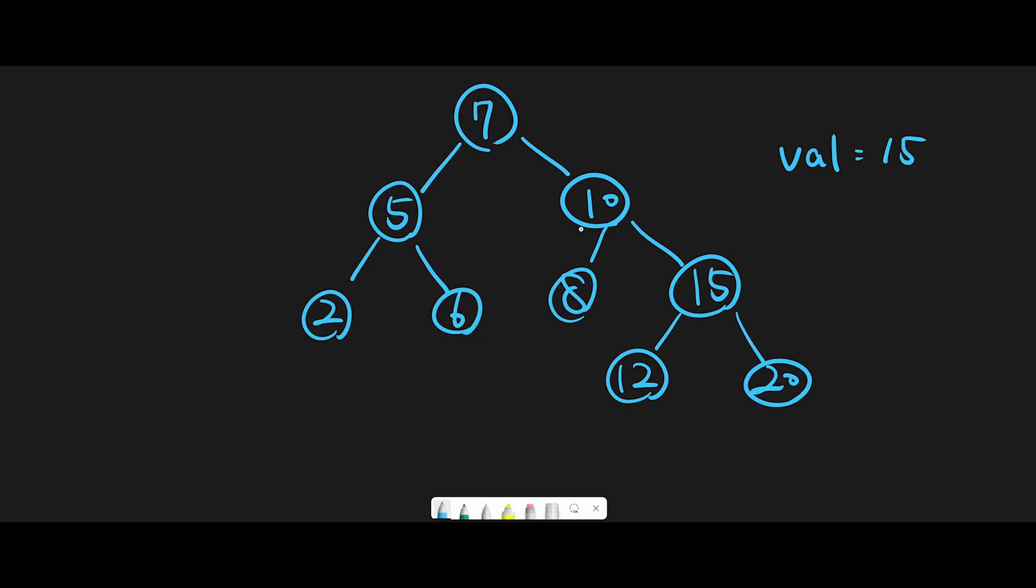And on the other hand, all values on the right side of the root node are greater than the root value. So 10, 8, 15, 12, 20, all values are greater than 7, right? So looks good.